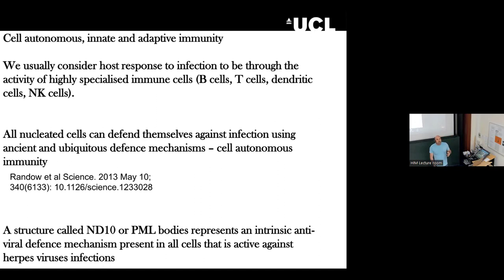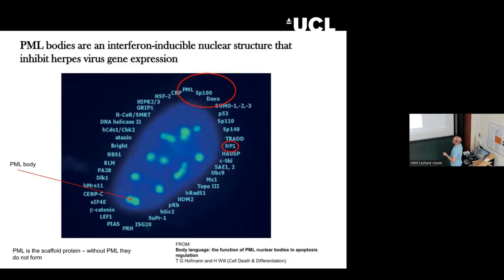What I'm going to talk about today, in the context of lytic and latent infections, is the structure we call PML bodies, or ND10 bodies. This is a cellular protein which is an important defence mechanism the host cell has against virus infection. So what are PML bodies? What we have here is the nucleus of the cell — the blue is the nucleus. Within that nucleus, we can use an antibody to stain for a protein called PML, and you see these green dots, which are the PML bodies or ND10 bodies.